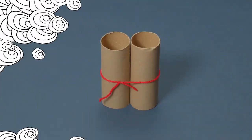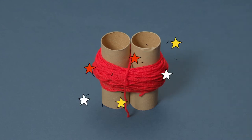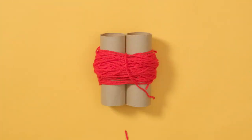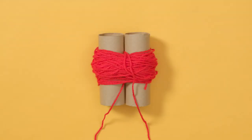Then wrap lots and lots of wool around the tubes until they look like this. Snip another bit of wool and tie a loose knot around the wool in the middle of the two tubes.